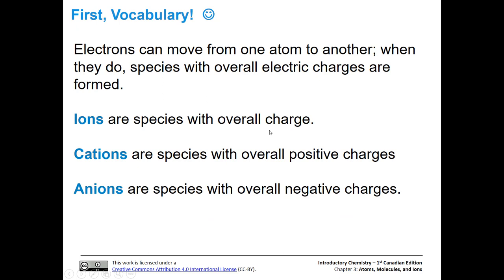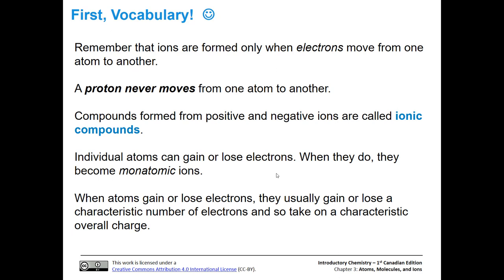The first thing we need to talk about is vocabulary. When electrons move from one atom to another, they generate species with overall electric charges, and these species are called ions. If the ion is missing electrons, or has fewer than would make it neutral, then it's called a cation, and those have overall positive charges. If the species has extra electrons, then it would be called an anion, and those extra electrons generate an overall negative charge. Ions are only formed when electrons move from one atom to another — we never have protons moving from one atom to another.